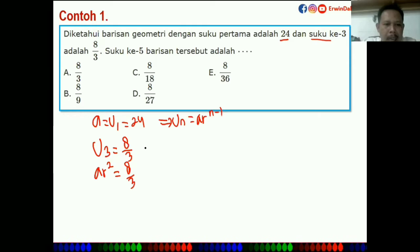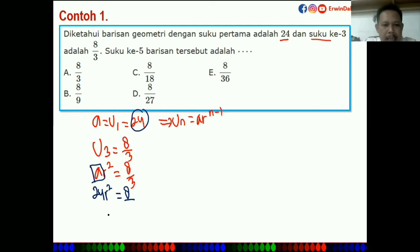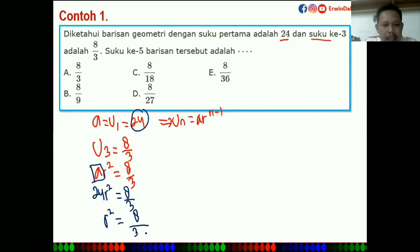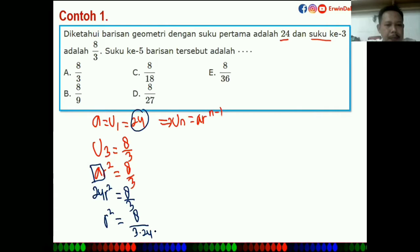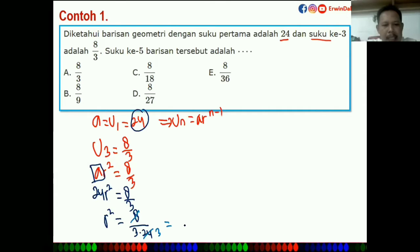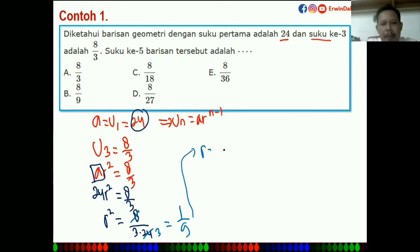Masukkan nilai A = 24, sehingga 24R² = 8/3. Maka R² = (8/3) × (1/24). Sama-sama dibagi 8, hasilnya R² = 1/9. Berarti R = 1/3.